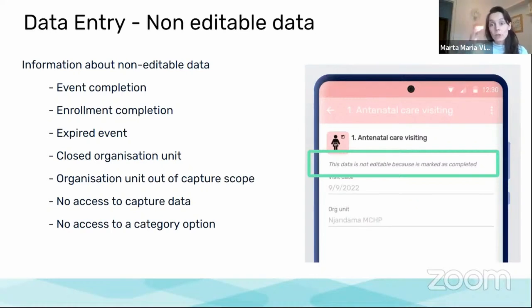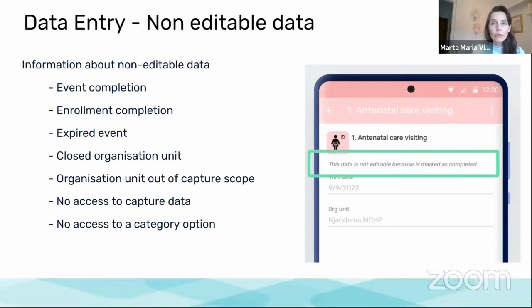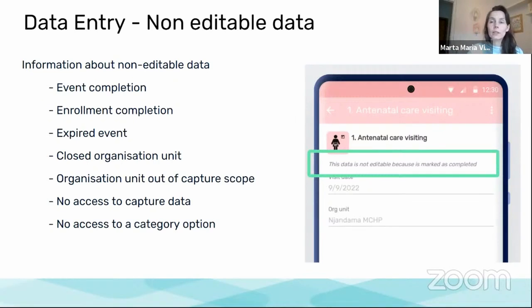Or doesn't have access to a particular category option. So what we are doing now is displaying this in the detail screen to the user, so when they cannot modify values, they know why, and then they can raise the question to the admin, knowing particularly what the issue is.